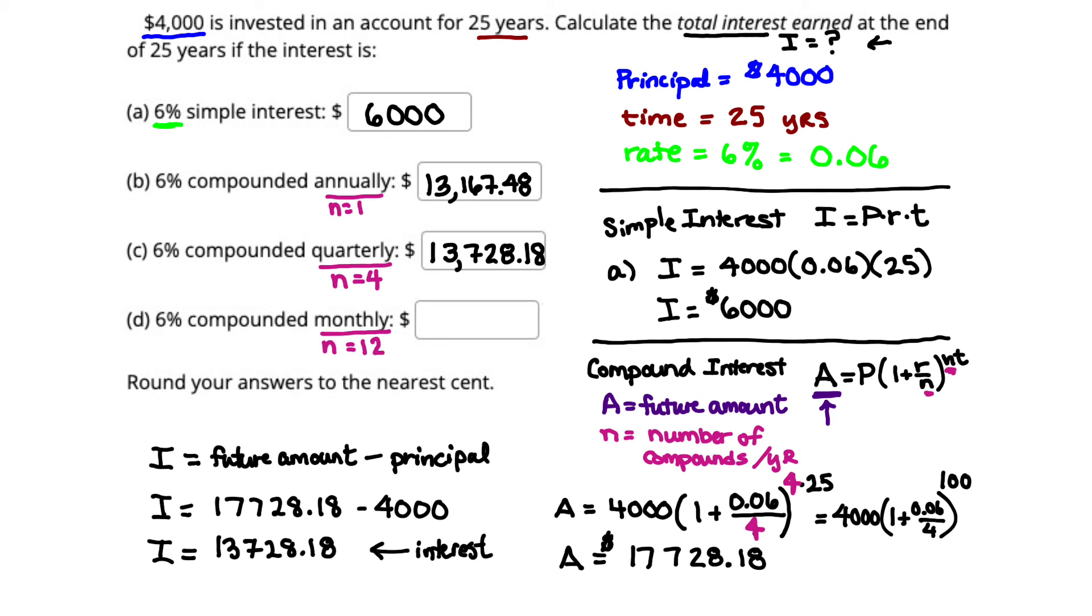So going back down to our compound interest formula, we're going to erase out that 4, and we're going to replace the 4 with the value 12. So we're going to take 12 times 25, and we're going to divide 0.06 by 12. So that means my exponent is no longer 100, and the value that I'm dividing by is no longer 4, and instead, I've got 12 times 25 being my exponent, which is 300 up there.